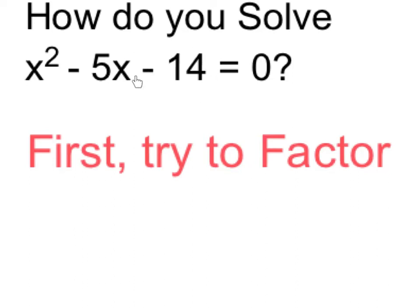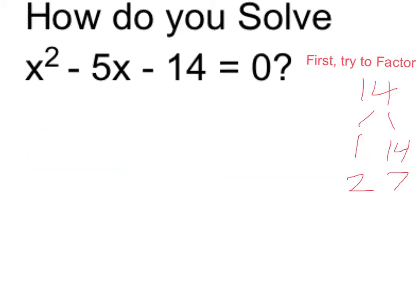So we want to try to find factors, things which multiply to give us a minus 14 and add to give us a minus 5. Now the factors of 14 itself are either 1 times 14 or 2 times 7.